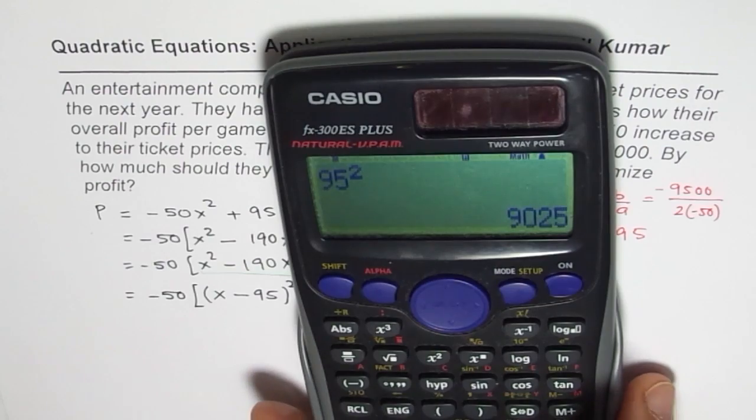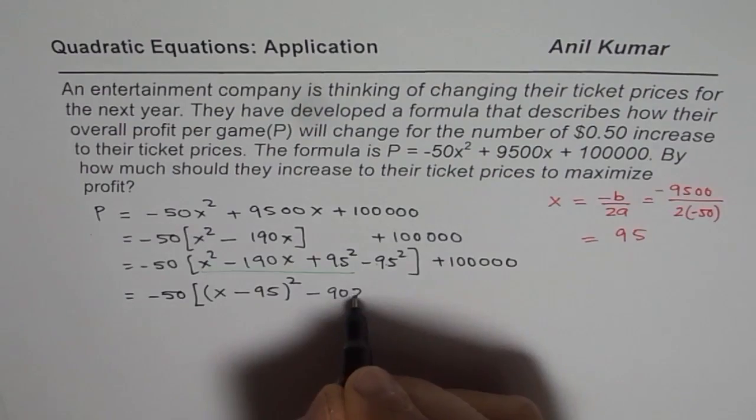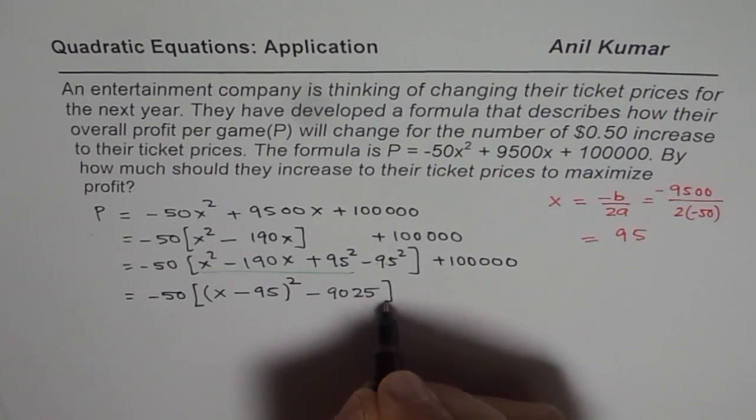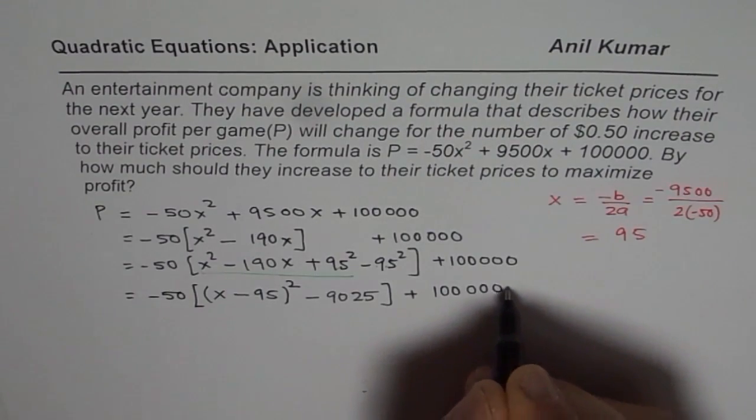Equals to 9025. So minus 9025 is what we get here, plus 100,000.